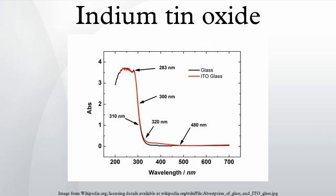In organic light-emitting diodes, ITO is used as the anode. ITO films deposited on windshields are used for defrosting aircraft windshields; the heat is generated by applying voltage across the film. ITO is also used for various optical coatings, most notably infrared reflecting coatings for automotive and sodium vapor lamp glasses.